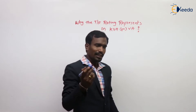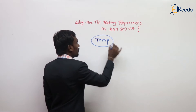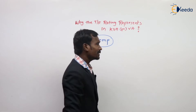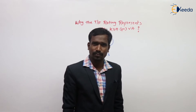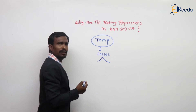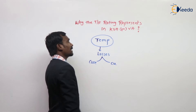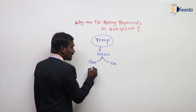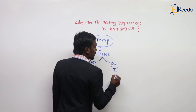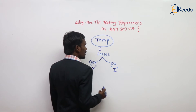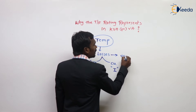Generally, the transformer operation mainly depends on temperature. The temperature mainly depends on losses. In our transformer, we have two types of losses: constant losses and variable losses — nothing but core losses and copper losses. The core losses mainly depend on voltage and the copper losses mainly depend on current.